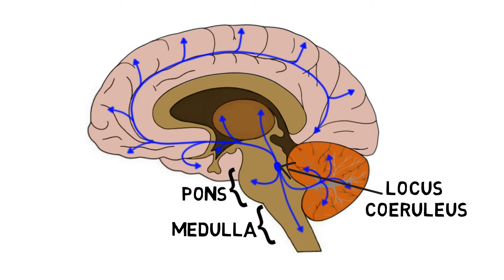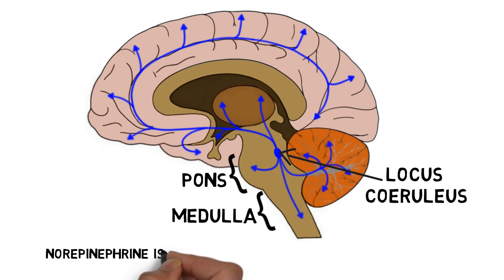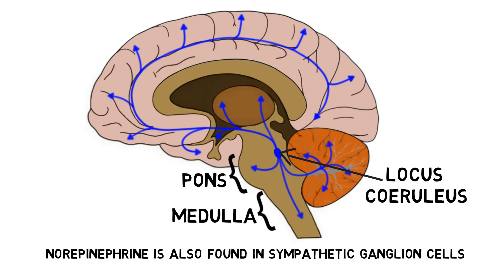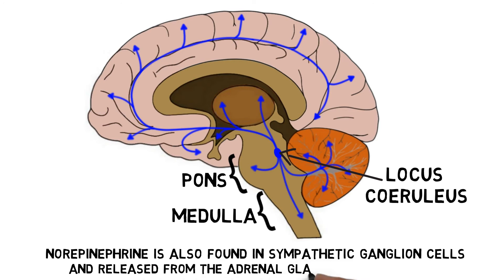Norepinephrine is also the primary neurotransmitter used by the sympathetic nervous system and is found in clusters of sympathetic neurons located near the spinal cord known as sympathetic ganglia. It is also released from the adrenal glands as a hormone.